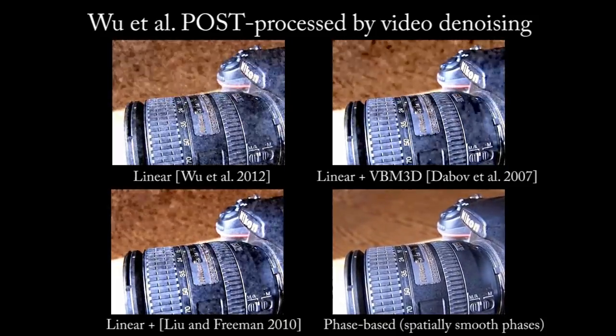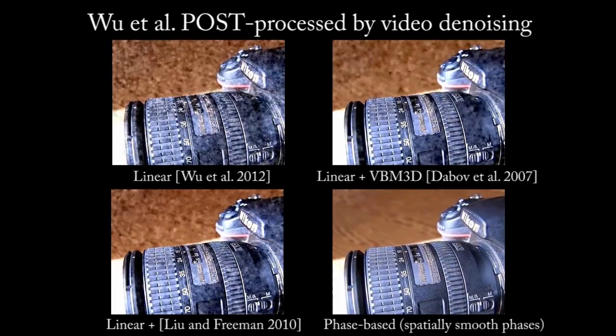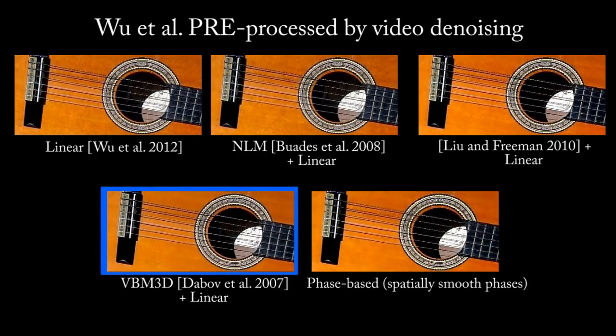Video denoising is also computationally expensive, taking about 10 times longer than the phase-based method. Applying video denoising prior to amplification can help in some cases, but it can also kill the motion signal as VBM3D does on the guitar sequence.